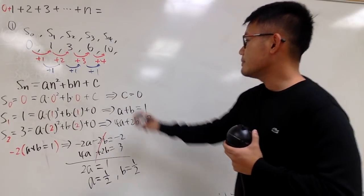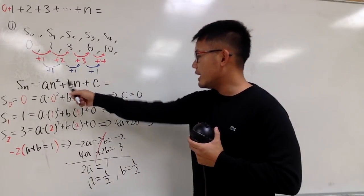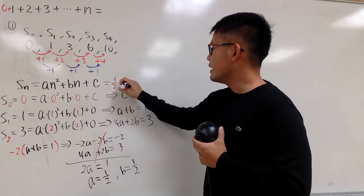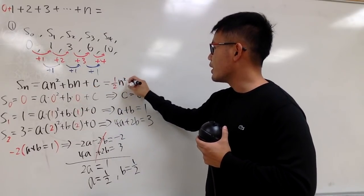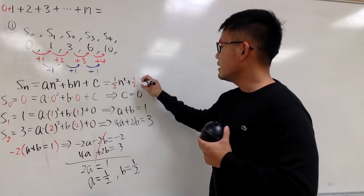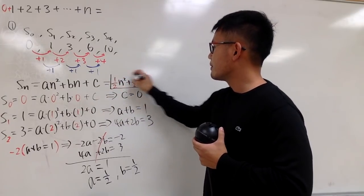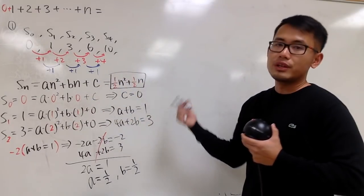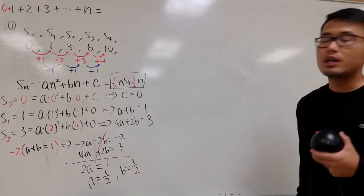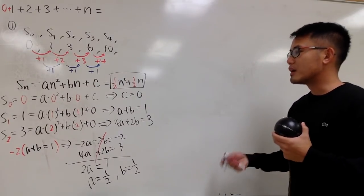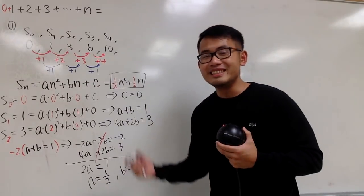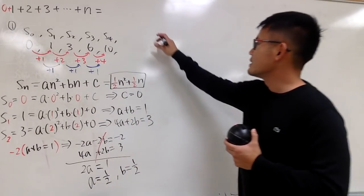So we got it: a is one half. Sn equals one half n squared plus one half n — this is the formula. That's the first way, the most algebraic approach you'd see in an algebra class.